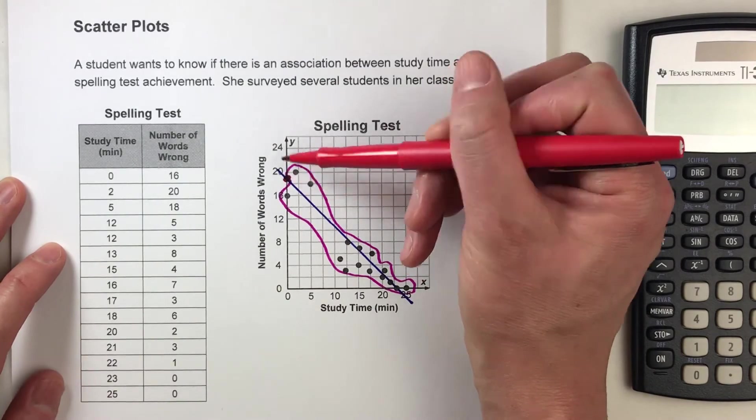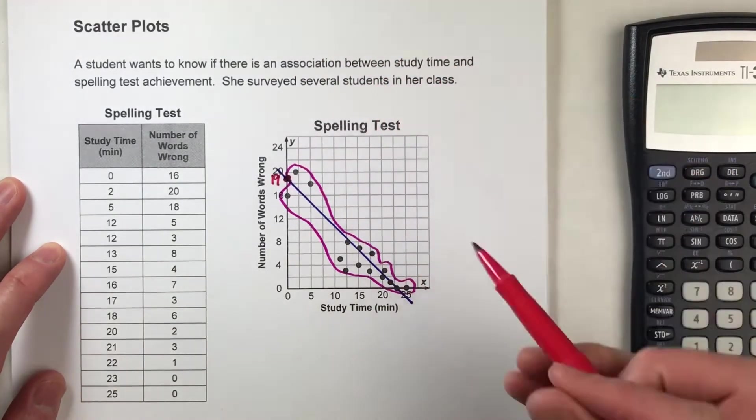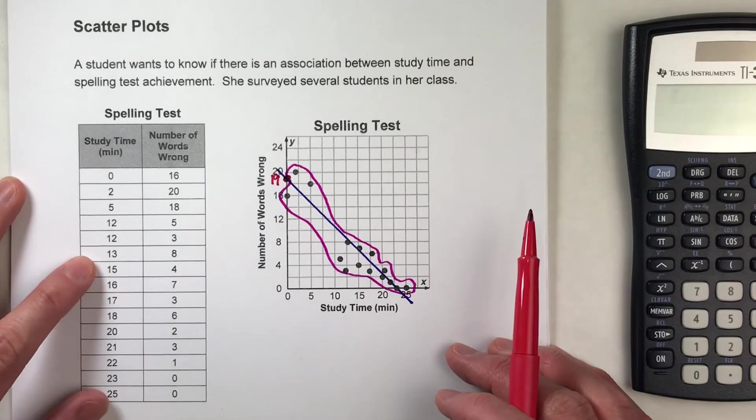it looks like it's going up by 2. So this is 16, this is 18, that's 20, so it's right in between. So let's say this is 19. It's about 19.